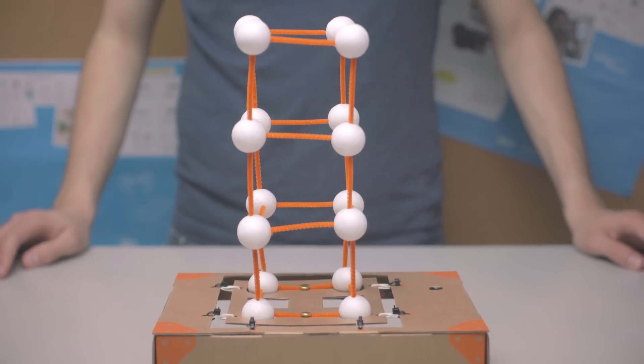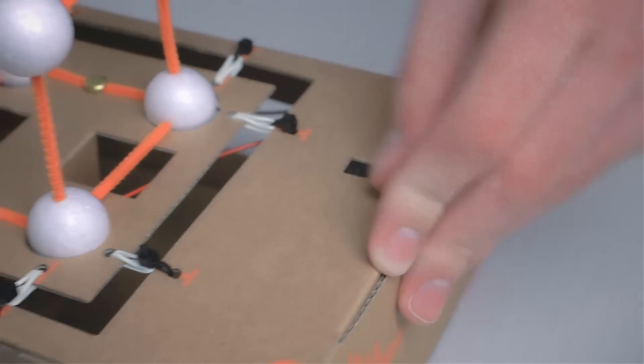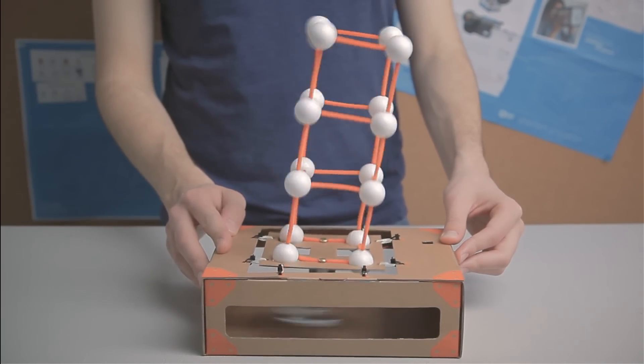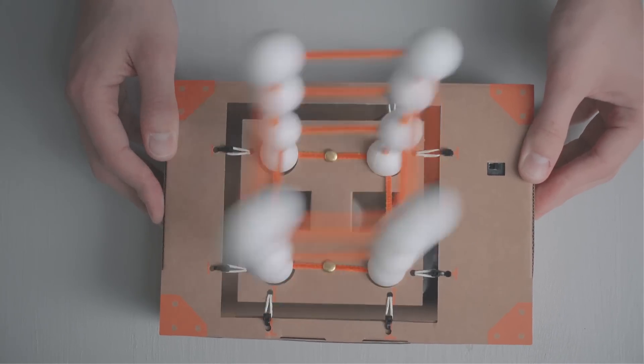Now let's use your shake table to make an earthquake. Holding the shake table steady with your hands, flip the switch and watch what happens. The structure you built should be shaking quite a bit. Turn off your shake table and let's build a damper.